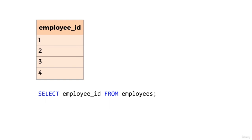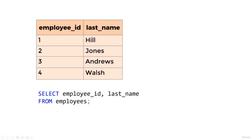If we want to select multiple columns from a table, we write each column name separated by a comma. For example, to select both employee ID and last name: we write SELECT employee_id, then a comma, then last_name, then FROM employees. Note that the last column in the SELECT clause does not have a comma after it — we only have commas between columns.